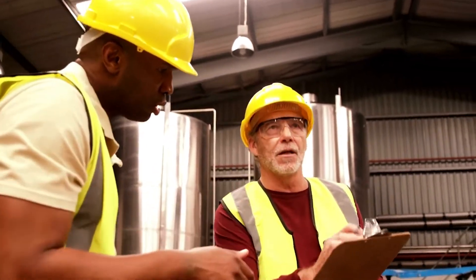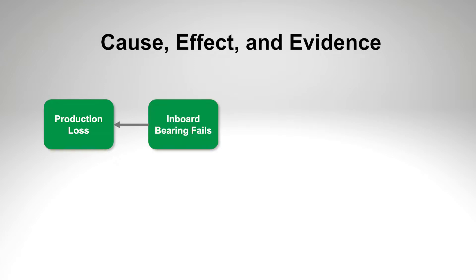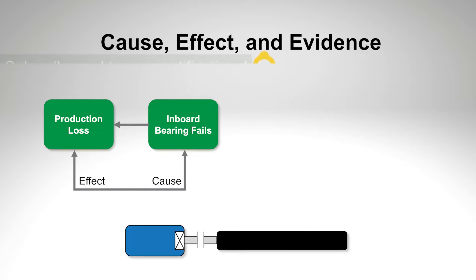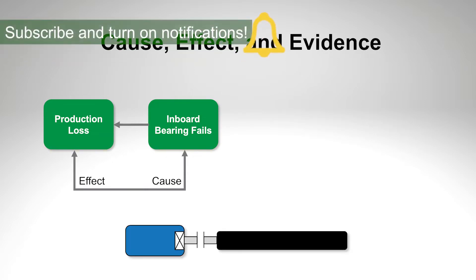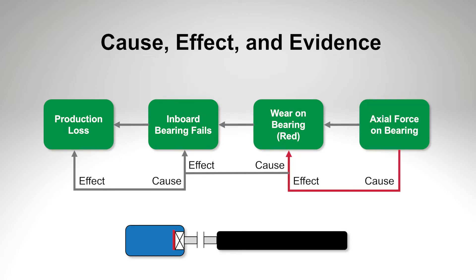So I want to show you a little bit how we think about it. Let's say we have a production loss — that's our trigger — and that was caused by what we write in a problem statement: the inboard bearing failed. So there's a motor with a bearing, and the black part there is supposed to be a roll, and hopefully a coupling between. The inboard bearing failed because there was wear on the bearing and an actual force on the bearing that caused it.